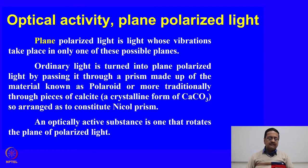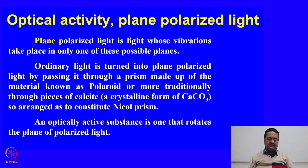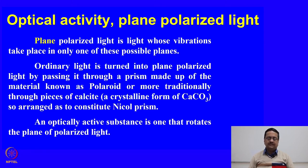A plane polarized light is a light whose vibrations take place in only one possible direction or one possible plane. Ordinary light is turned into plane polarized light by passing it through a prism made up of a material known as polarite, or more traditionally through a piece of calcite, a crystalline form of calcium carbonate.